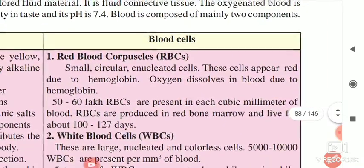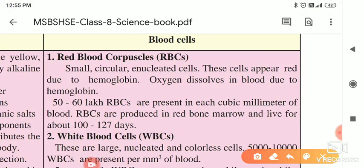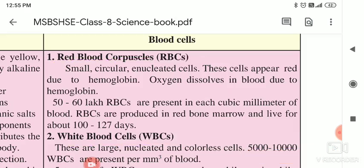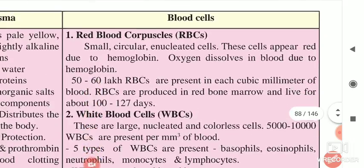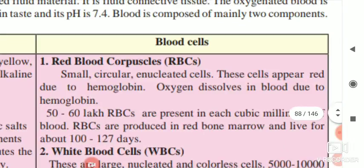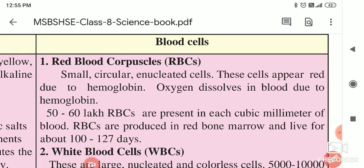Now after this we will see the blood cells. Blood cells are three types: RBCs, WBCs, and platelets. First of all, RBCs — that is Red Blood Corpuscle. R from red, B from blood, and C for corpuscle. RBCs are the main blood cells. RBCs are small and circular.